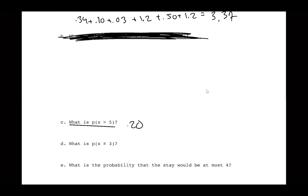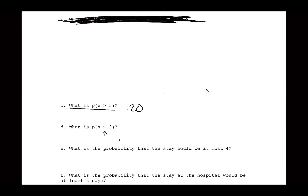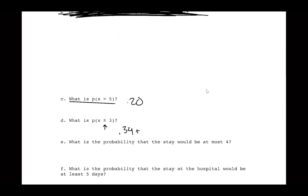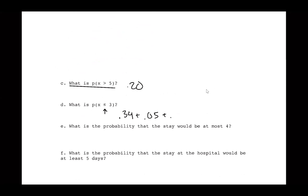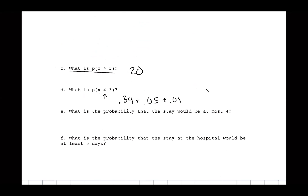Part D: what is P(X ≤ 3)? That means x = 1, 2, or 3. Add P(1) + P(2) + P(3) = 0.34 + 0.05 + 0.01 = 0.40.